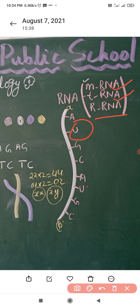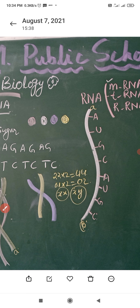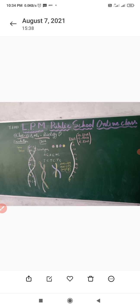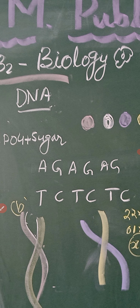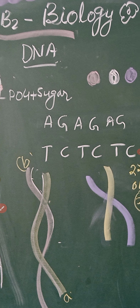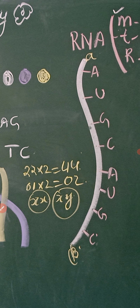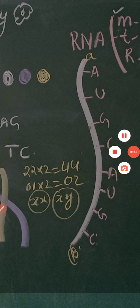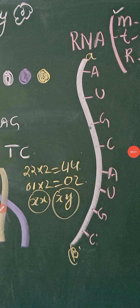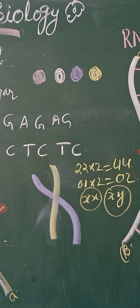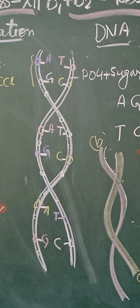In RNA there is no thymine — thymine is absent in RNA. In place of thymine, uracil is present. RNA is a single strand. You should know that DNA is the genetic material, while RNA is not genetic material. I am now going to explain why DNA is a genetic material and why RNA is not.